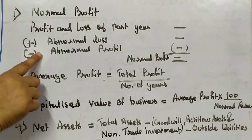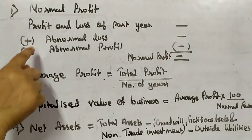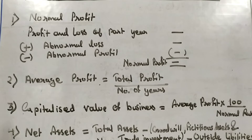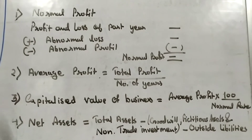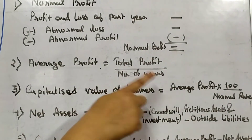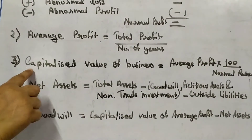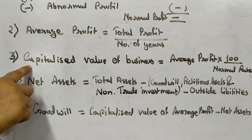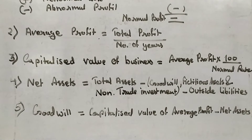As discussed in the previous video, normal profit is the profit and loss of past particular years plus abnormal loss minus abnormal profit. We then calculate average profit, which equals total profit of past few years divided by number of years. In the third step, we determine the capitalized value of business: average profit multiplied by 100 divided by normal rate of return.